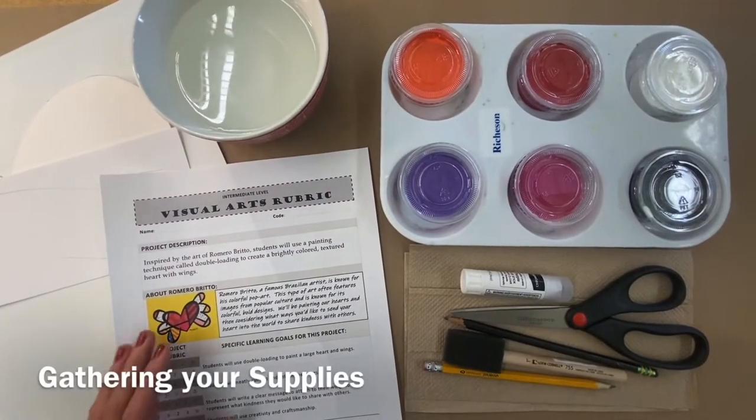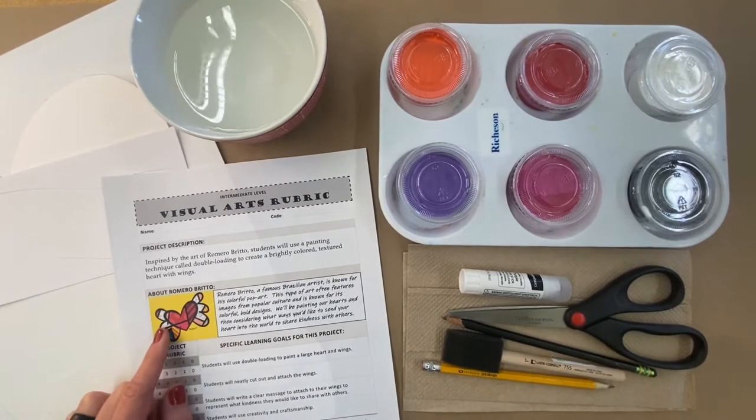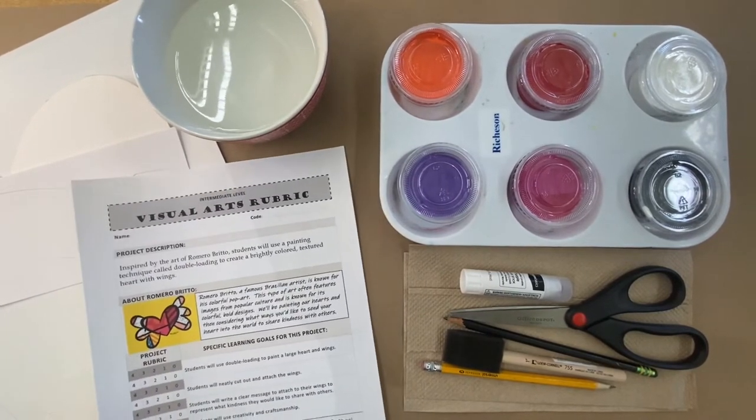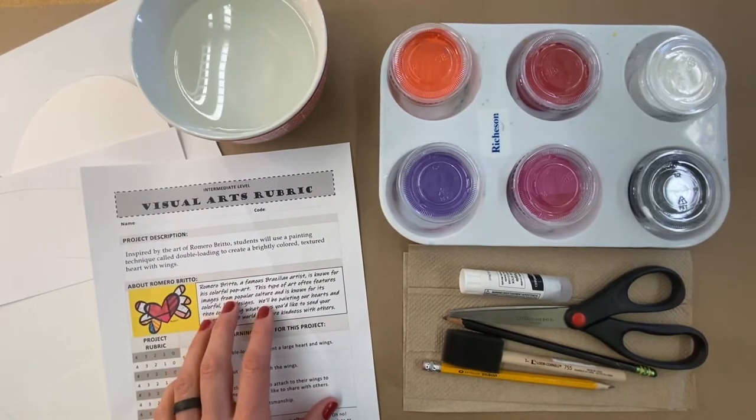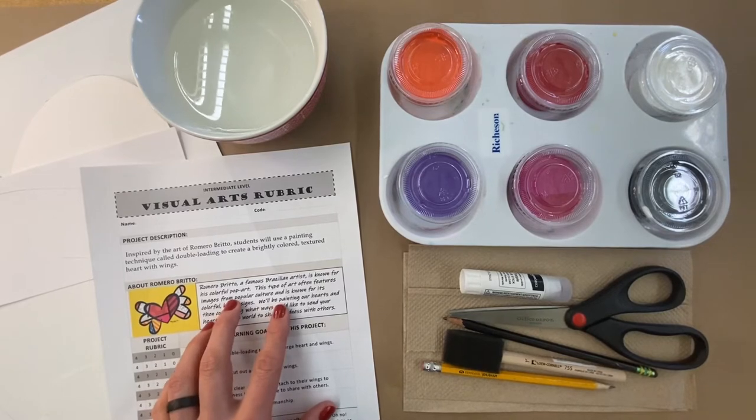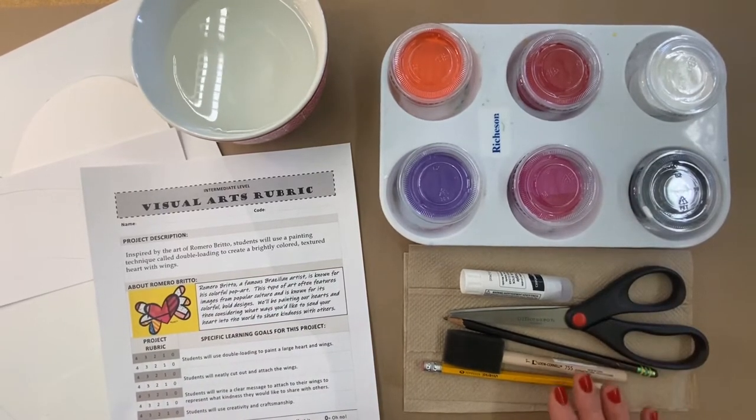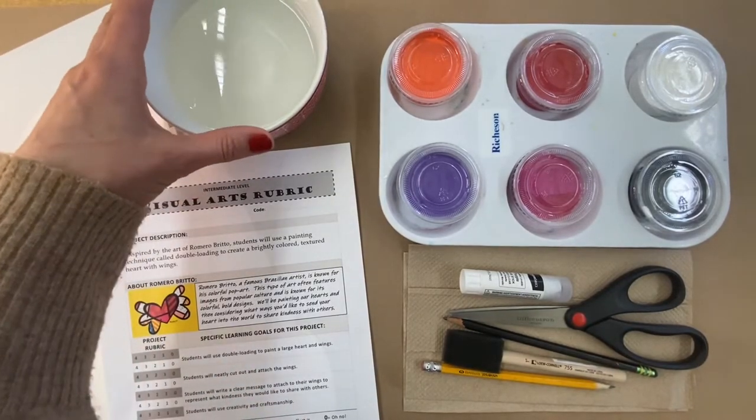Artists, now that you've learned about Romero Brito, we are ready to begin our project. These are the materials that you'll need: you need to be able to glance at your rubric to make sure you understand the learning targets. You need your paint, scissors, a pencil, brush, and glue. I would also suggest a cup of water and a paper towel.